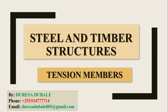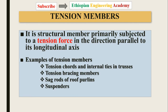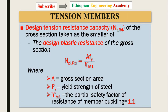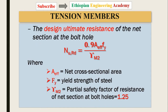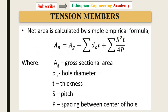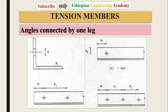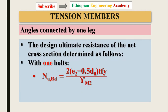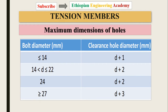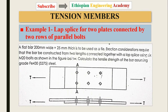In the previous part we covered all the truss members and the example of tension members — axial load members — how to calculate the design value and the design tension system capacity, the ultimate resistance of the net section, and how to calculate the net cross-section area for parallel and staggered arrangements, and how angles connected by one leg and the design ultimate resistance of the net cross-section are determined, as well as nominal values and maximum dimensions of holes.